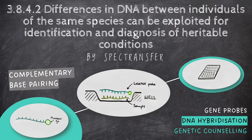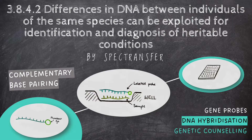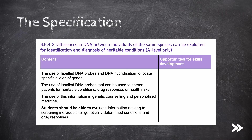Hey guys, welcome to SPECTransfer and to topic 3.8.4.2 — differences in DNA between individuals of the same species can be exploited for identification and diagnosis of heritable conditions — from the AQA A-level biology specification. As always, let's start with a look at our specification.